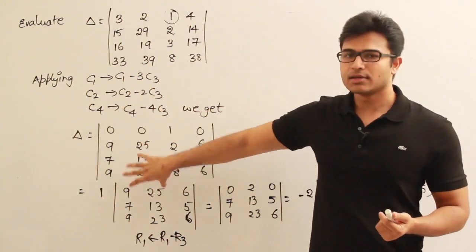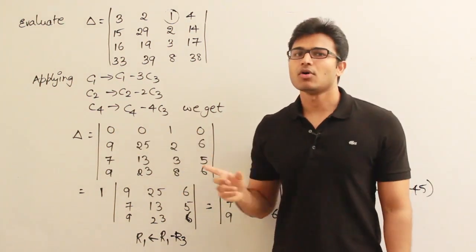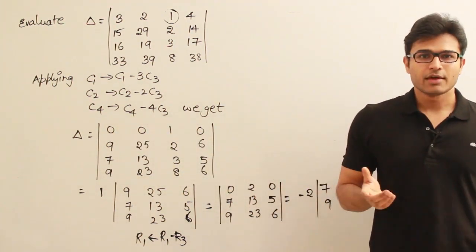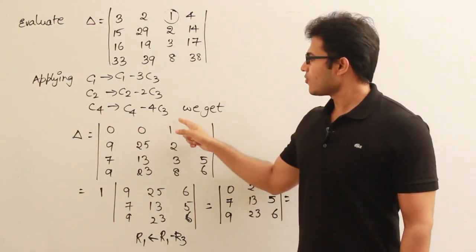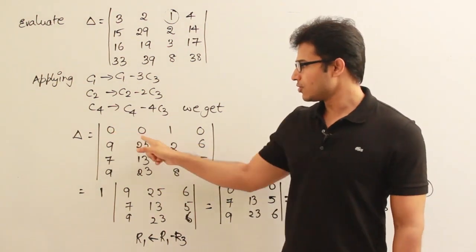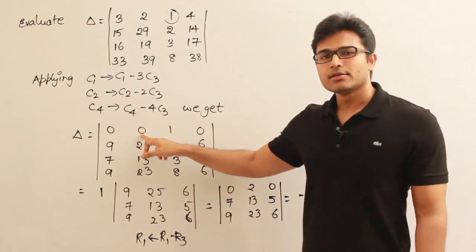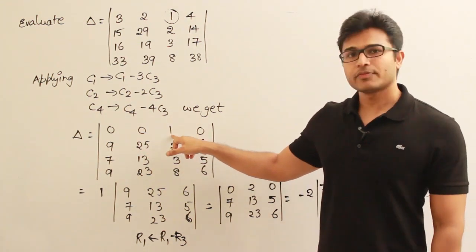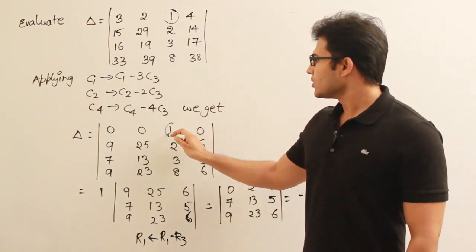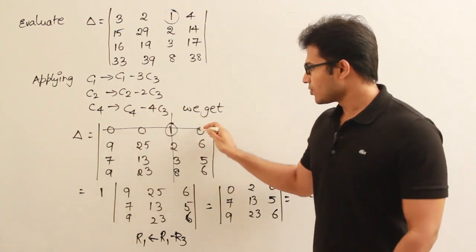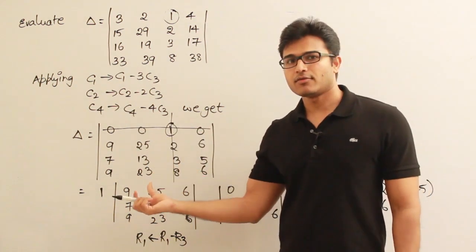After all these operations, I got this determinant. Now if you observe, most of the elements of the first row are zeros, so we can expand it over that row. When I expand it over this row, this zero into the cofactor is going to be zero, so no need to do that. But this one, it is 1 into the cofactor of this. You have to remove this column and remove this row and take the remaining determinant and find out the cofactor.